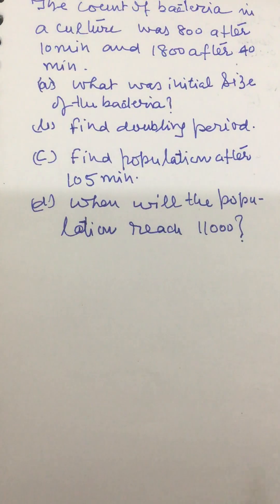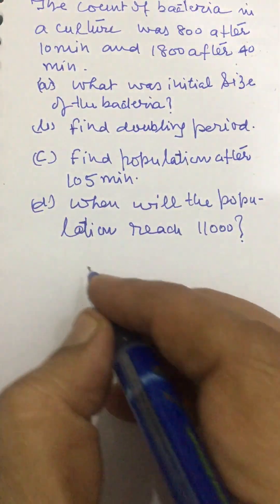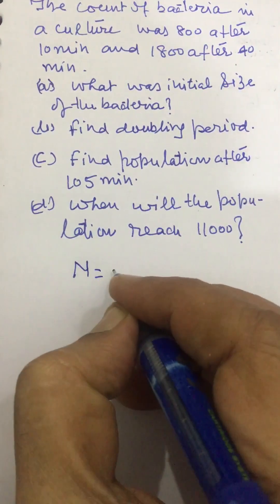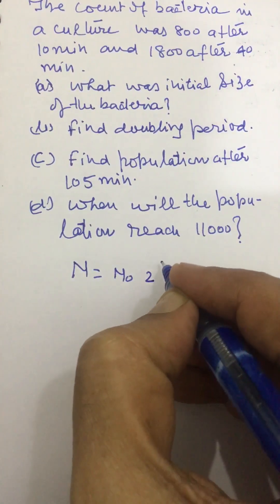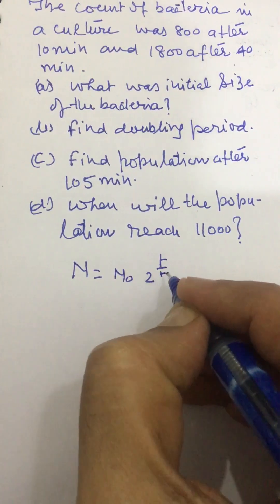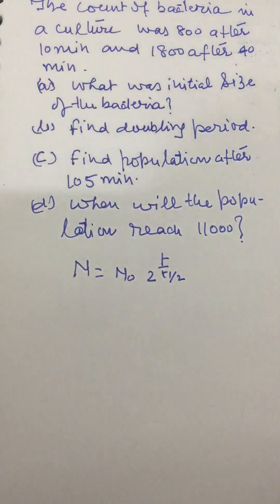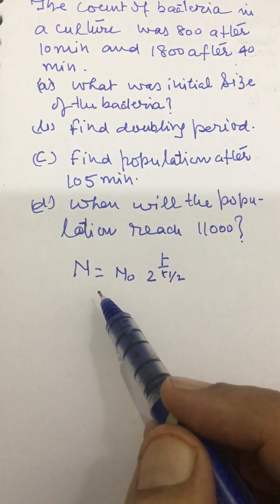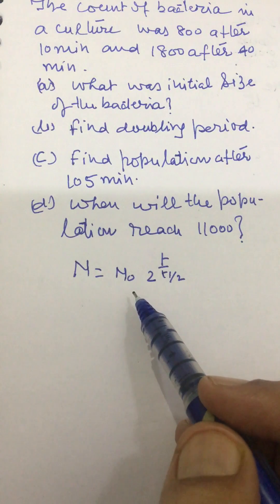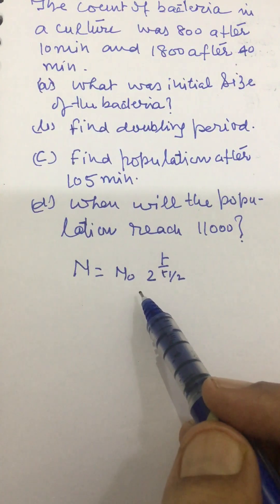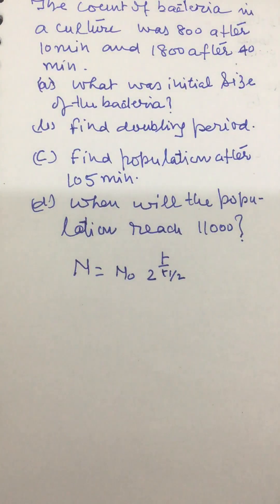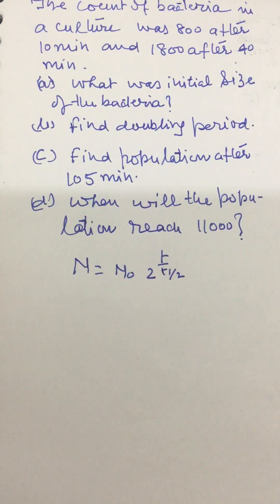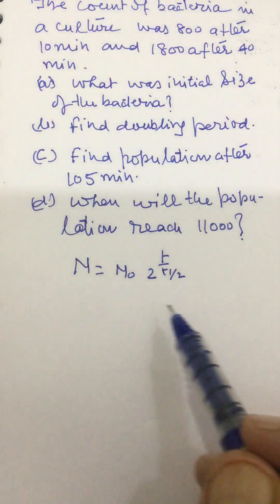For solving this problem, we have the equation n equal to n₀ times 2 raised to the power t divided by t-half, where n is the number of bacteria at any time t, n₀ is the number of bacteria in culture at t equal to 0, and t-half is the doubling period. So we have to find out n₀ and t-half.